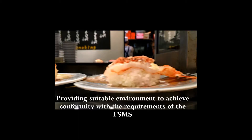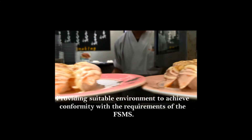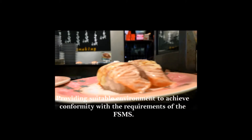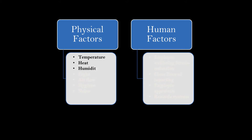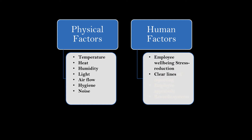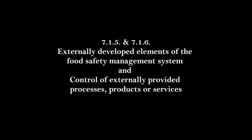Work environment. Don't misunderstand this term — the standard doesn't mean the great outdoors by work environment. This means providing a suitable environment to achieve conformity with the requirements of the FSMS. A suitable environment can be a combination of human and physical factors. Physical factors such as temperature, heat, humidity, light, airflow, hygiene and noise. Human factors such as employee well-being, stress reduction, clear lines of reporting, employee appraisals and reward systems.